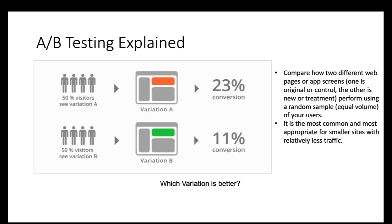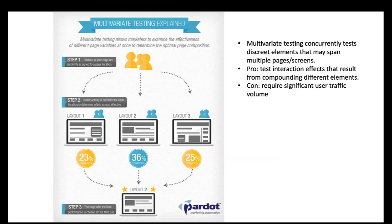In A/B testing, 50% of visitors see variation A — with an orange content block — which drives a 23% conversion rate, and the other 50% see variation B — with a green content block — resulting in 11% conversion rate. Variation A is better because it has the higher conversion rate, so it makes sense to roll out that new design. A/B testing compares how two different web pages or app screens perform using a random sample of equal volume — one is the original control group, the other is the new treatment group. A/B testing is the most common and most appropriate for smaller sites with relatively less traffic.